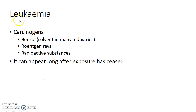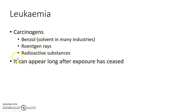Leukemia, or cancer of blood components — the carcinogens responsible are benzol, which is used as a solvent in many industries, x-rays and radioactive substances. It can appear long after exposure has ceased.